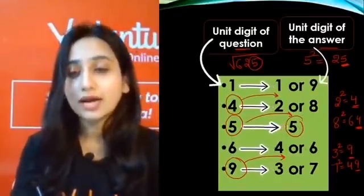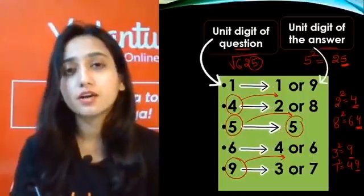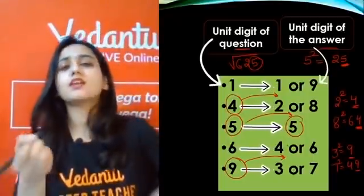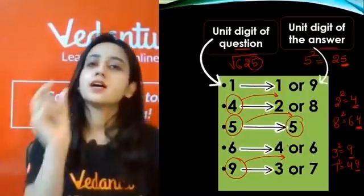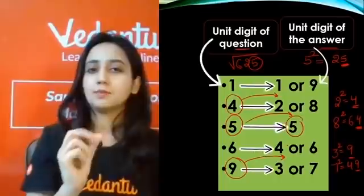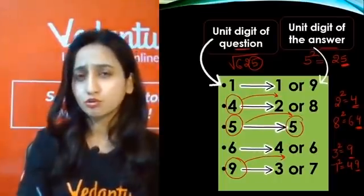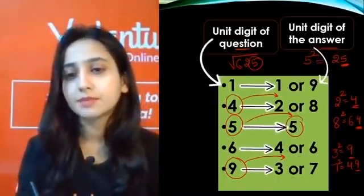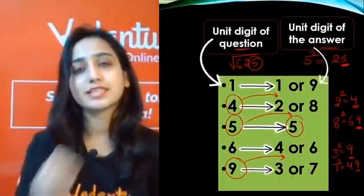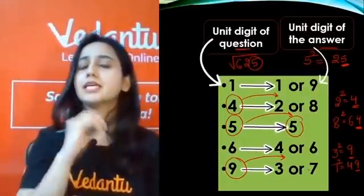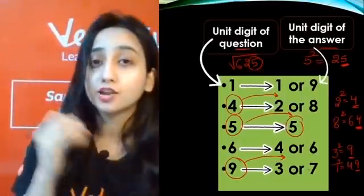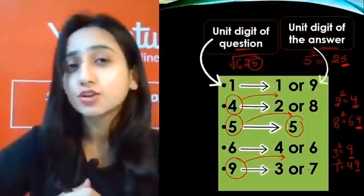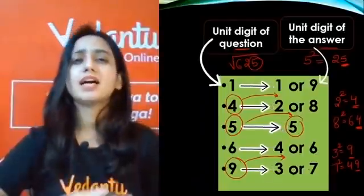If the unit digit in the question is 6, then the answer unit digit is 4 or 6, since 4 squared is 16. Notice that the pairs always add up to 10: 4 and 6 make 10, and 3 and 7 also make 10. This pattern is easy to remember. Once you know this table, the trick becomes straightforward.